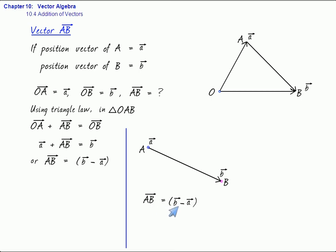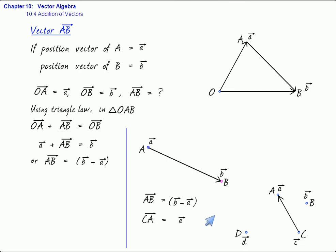Let me take more examples. Suppose you have points A, B, C, D whose position vectors are respectively denoted by small a, b, c, d. Can you tell me how much will be vector CA? The terminal point is A, so it will be a minus c. What will be vector DC? The terminal point is C and the initial point is D, so it will be c minus d. That is what I want to teach you — if you know the position vectors of certain points, you can work out the vectors along the segment joining the two.